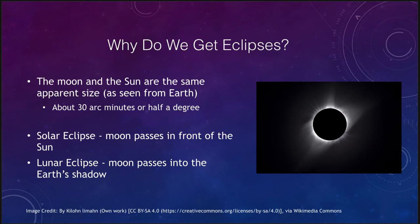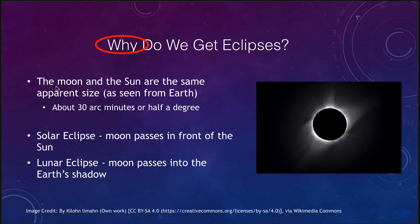First, we want to look at why we get eclipses in the first place. Eclipses simply occur when one object passes in front of another. We see eclipses in the moons of Jupiter, and in other star systems where a planet passes in front of a star blocking some of its light. In our case, the moon and the sun are both the same apparent size as seen from the earth — about half a degree in size.